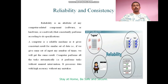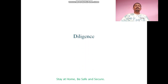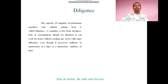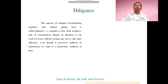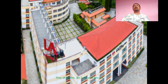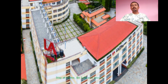The next feature of a computer is diligence. Diligence is the capacity of a computer to perform repetitive tasks without getting tired. A computer is free from tiredness, lack of concentration, fatigue, etc., and therefore it can work for hours without creating any errors with the same efficiency. There is a comparative difference between humans and computers in this sense — a computer never gets tired even if it processes millions of instructions millions of times, whereas humans get tired after doing certain activities.